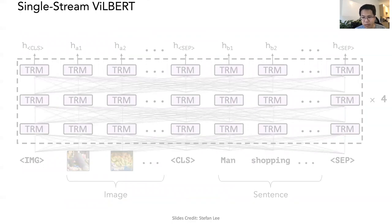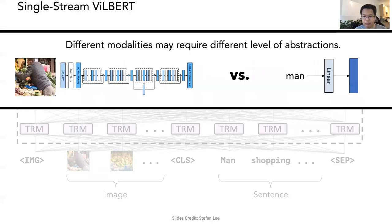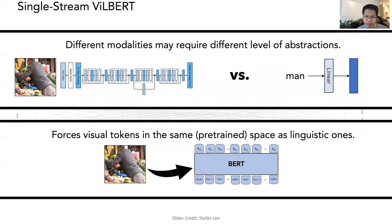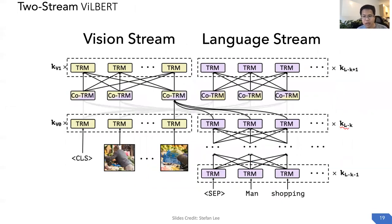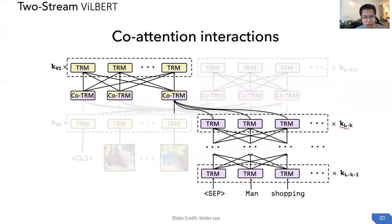One problem we found with directly using the BERT model is that different modalities may require different levels of abstraction. For the linguistic stream, given the word 'man,' a single embedding layer converts it to a representation. For the visual stream, given an image, it usually involves more than 100 layers for the final representation. Another reason is that forcing visual tokens into the same embedding space as linguistic ones might introduce noise. Instead, our model is two-stream, with independent parameters for the vision stream and language stream. Each stream is a stack of transformer layers and a co-attention transformer layer. To model interactions between modalities, the co-attention layer attends to the output of the transformer layer from the other modality.